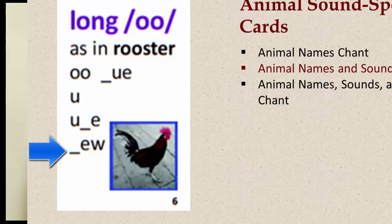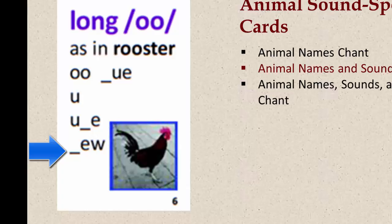Continue practice until most students have mastered each of the names and sounds on the cards. After students have mastered each of the names and sounds on the animal sound-spelling cards, teach the spellings of each card. Tell students that the blanks in the spellings mean that another letter or letters must be placed in the blanks to form syllables. Play the animal names, sound, and spellings chant while you display the cards. Students say each letter and blank of the spellings as you point to the spelling or spellings.